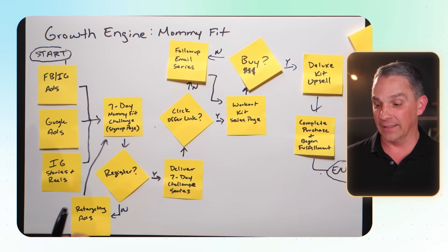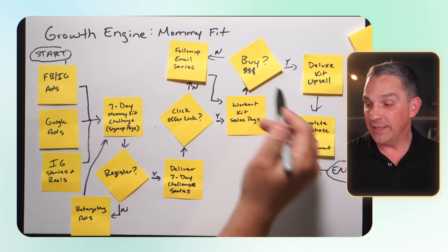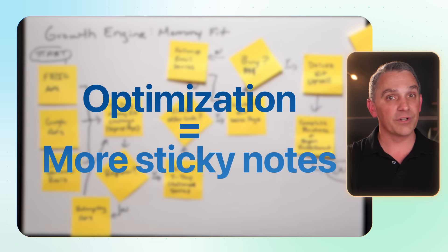A couple of important points before step four. First, make sure you're documenting what IS, not what should be — that is incredibly important. Oftentimes clients want to say 'I know we should be doing this,' but we want to document what is, because we want to visualize so that we can then optimize. If you know you're going to be doing something soon, you can use a different colored sticky note. Need more traffic? Add some more sticky notes to the front. Clients aren't converting at a high enough rate? Maybe add more steps to the sales process. Optimization equals adding more sticky notes.